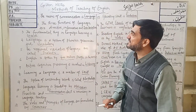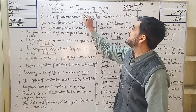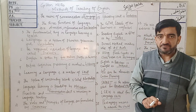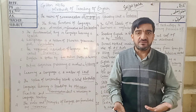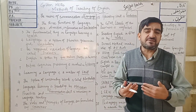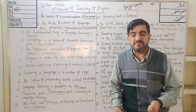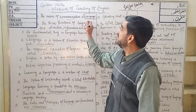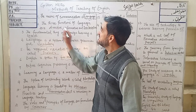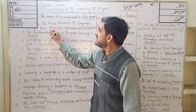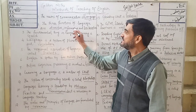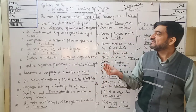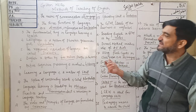MCQ 1: The means of communication is language. Man cannot live alone — he always needs communication. Communication is the process of exchanging views, ideas, concepts and plans with other people. So the means of communication is language. MCQ 2: The three functions of language are directive, informative, and declarative. Directive means used for guidance, informative means sharing information, and declarative means used for making announcements.